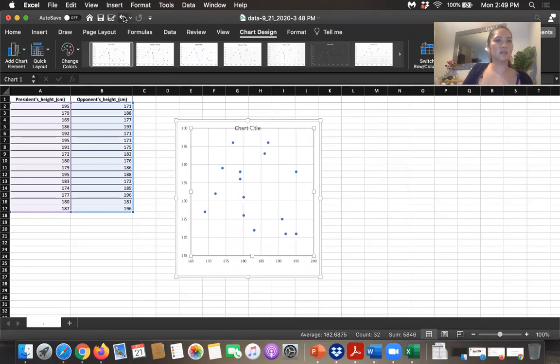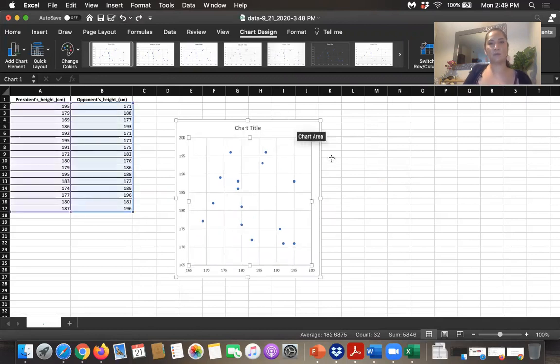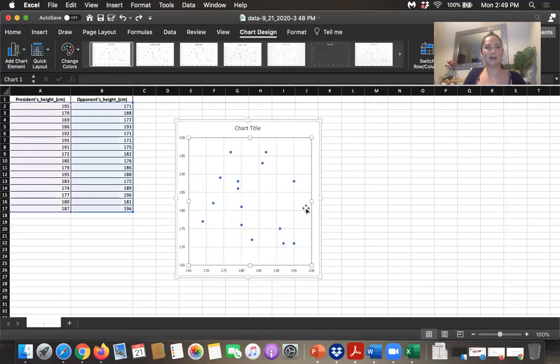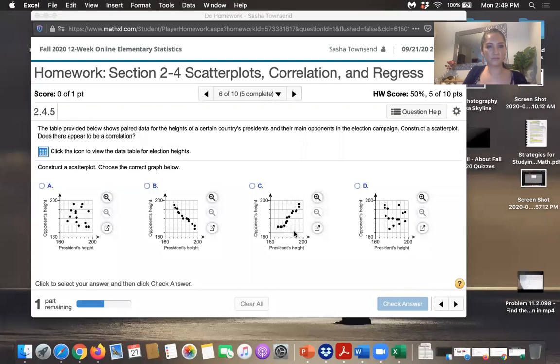So oops, let's undo that. So I'm looking for a scatter plot that looks roughly like this on the MyLab Statistics site. And I think A and D are most similar to the graph I have in Excel. So I know I have to go back to my Excel graph and differentiate between the two.